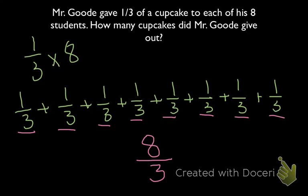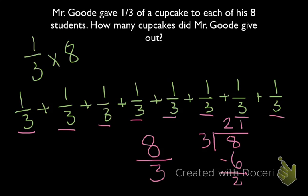So Mr. Good can give out 8 thirds of a cupcake. Let's change this from an improper fraction into a mixed number. 3 goes into 8 twice. 3 times 2 is 6. We're left with remainder 2. So our final answer, as a mixed number, is 2 and 2 thirds cupcakes.